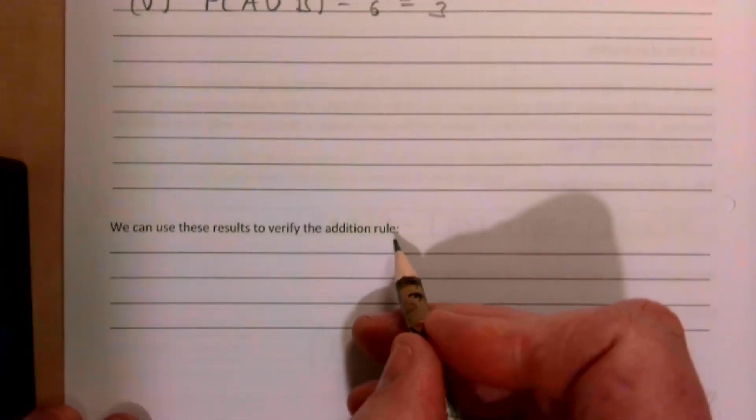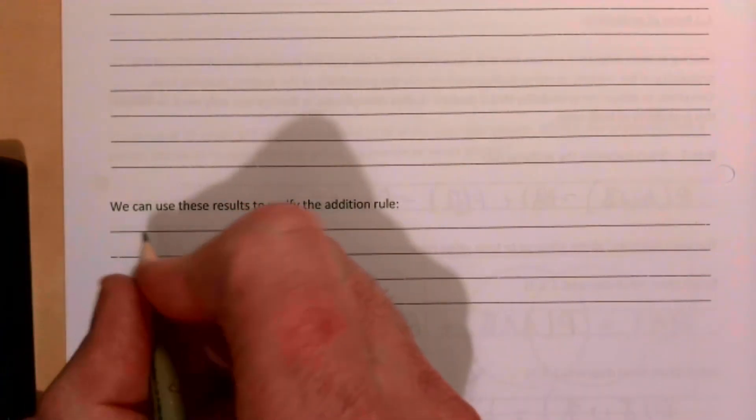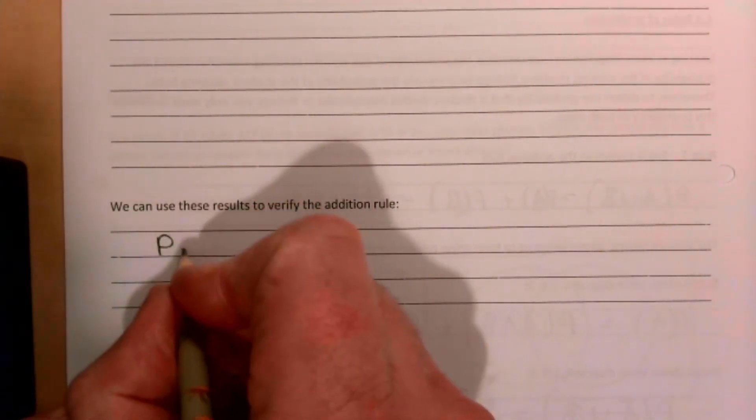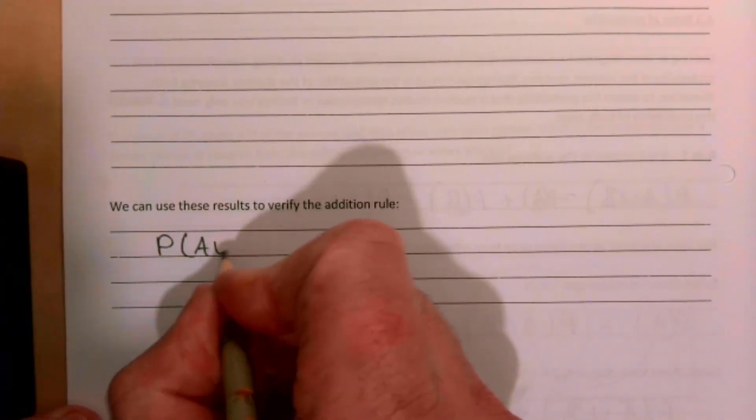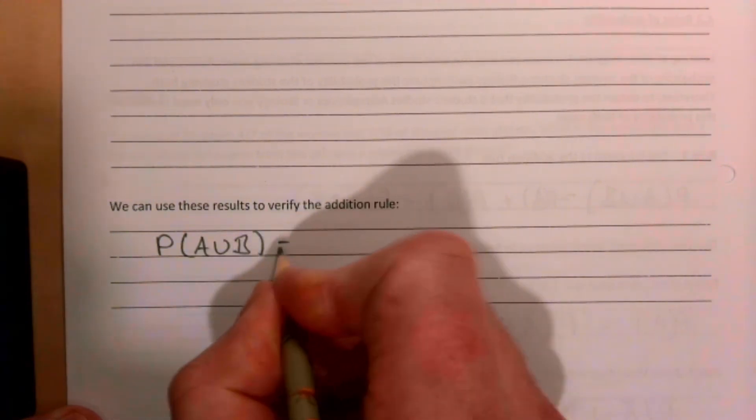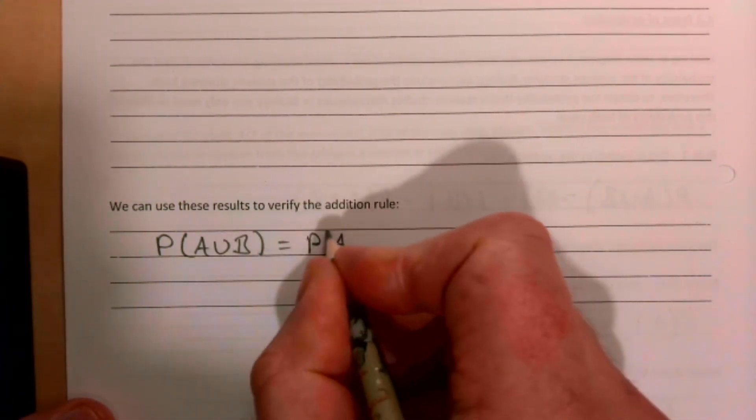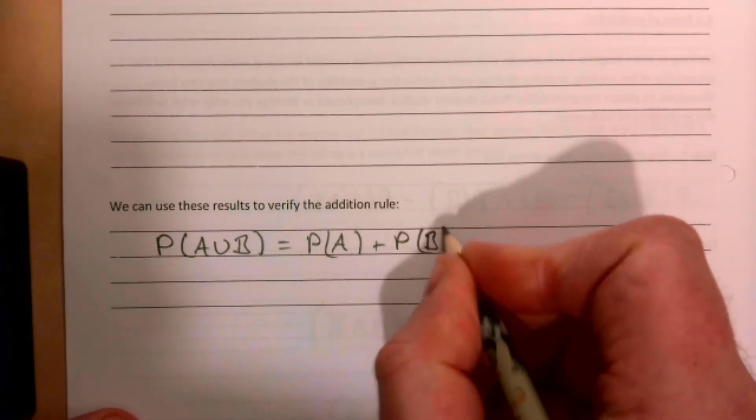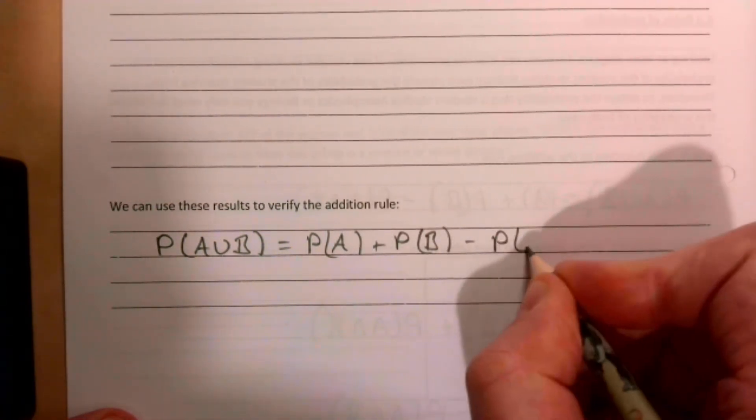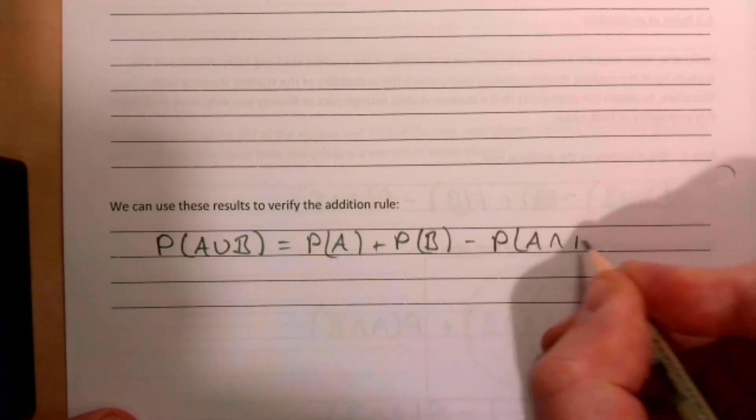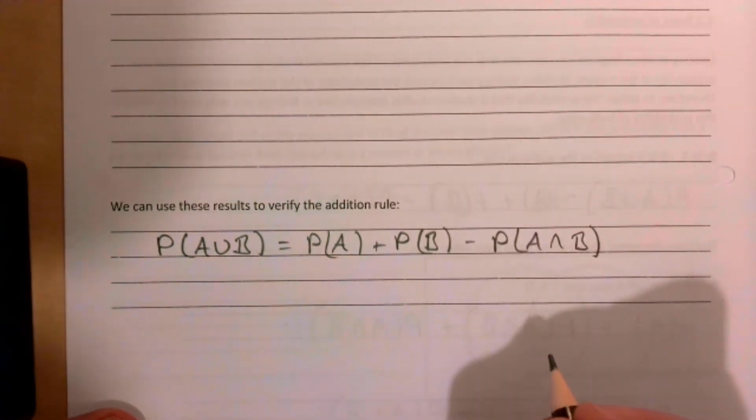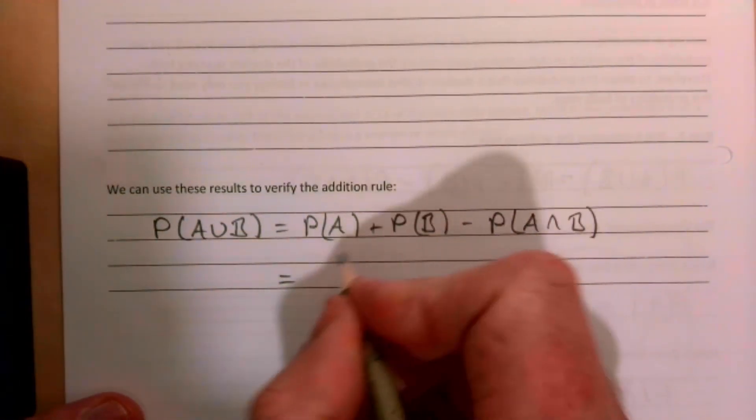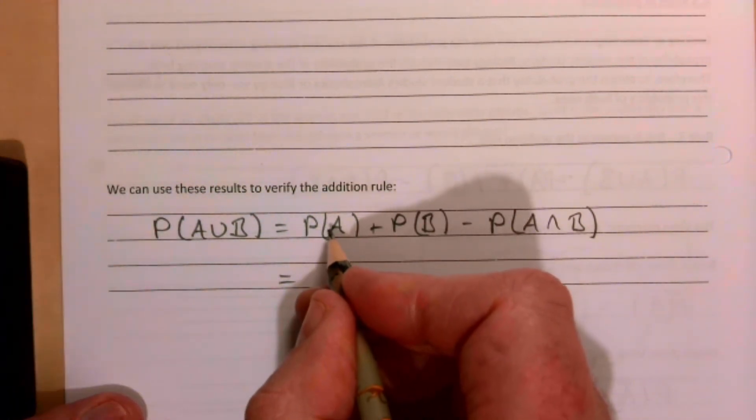Just down at the bottom here of the page it says we can use these results to verify the addition rule. So let's see if we can get it to work. Our addition rule is the probability of A or B is equal to the probability of A plus the probability of B, take away the probability of A and B.